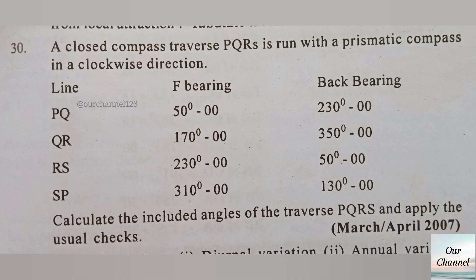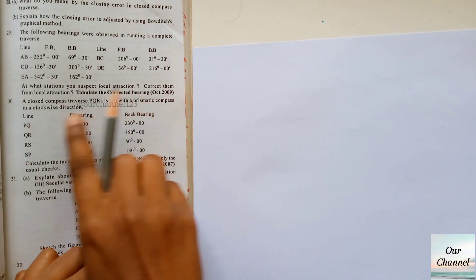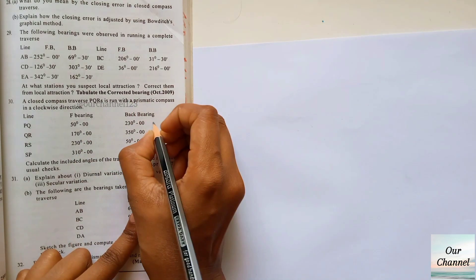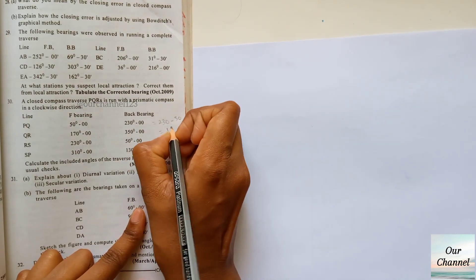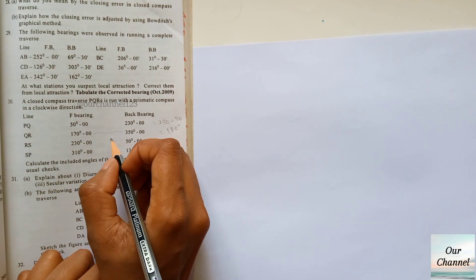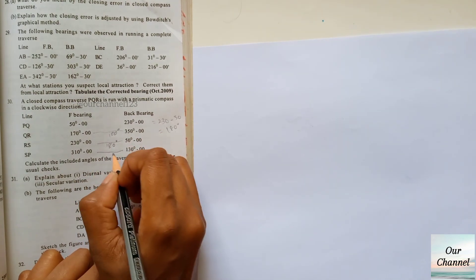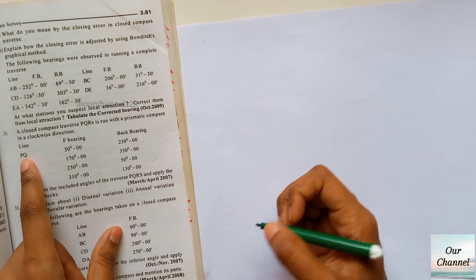Hello friends, welcome back to our channel. Today we are going to learn how to find the included angles of a given traverse. First, we should check if there is any local attraction or not. To find that, we should check the difference between the given fore bearing and back bearings. If the difference is 180 degrees, the given readings are free from local attraction, and we can find the included angles. Here, 230 degrees minus 50 degrees is 180 degrees, and similarly the difference between the remaining readings is also 180 degrees.